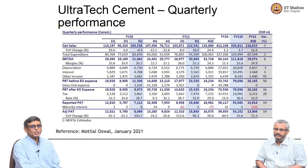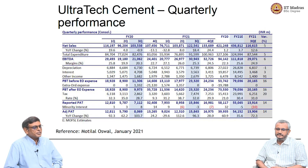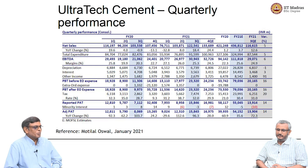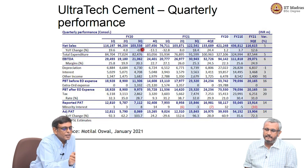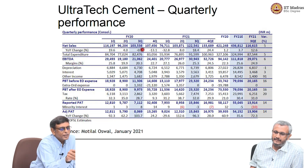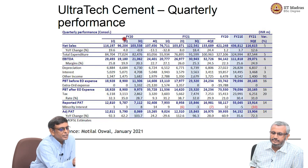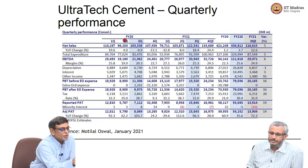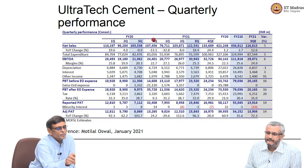Let us take UltraTech Cement, which is the first of our companies. I have charted here the quarterly performance of UltraTech. Things to observe are that during the pandemic, we did have a decline — from 1,14,000 crores it declined in the second quarter to 96,000 crores, but quickly recovered to 1,03,000 crores and then 1,07,000 crores.